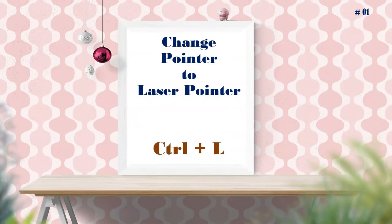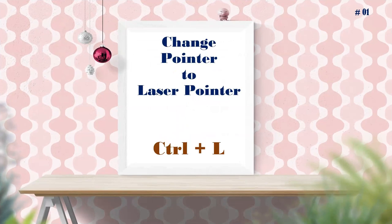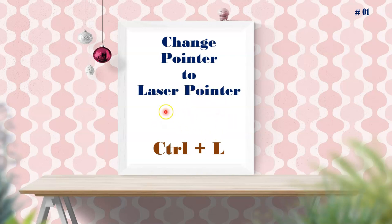The first shortcut is changing the pointer to laser point. While delivering classes in real classrooms, we use some kind of pointer to specify a point. But in virtual classrooms or virtual presentations, we need to highlight important points with a laser pointer. For this, the shortcut is Ctrl+L. Press Ctrl and L together on the keyboard. Once pressed, you immediately get a laser pointer, which you can use to highlight important points while delivering classes.